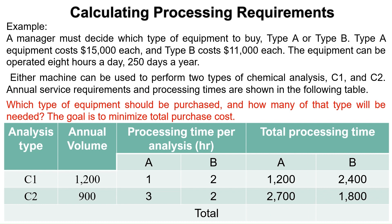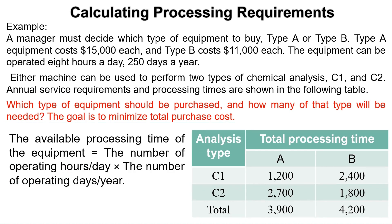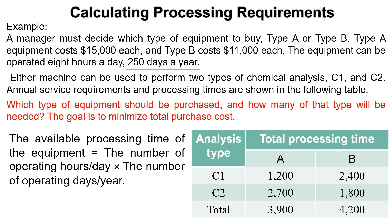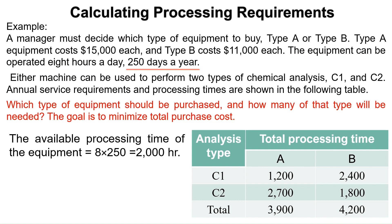Then calculate the total processing time for each machine. For machine A, it is 1,200 plus 2,700 equal 3,900. For machine B, it is 2,400 plus 1,800 equal 4,200. Now calculate the available processing time of the equipment by multiplying the number of operating hours per day by the number of operating days per year. That is 8 times 250 equals 2,000 hours.